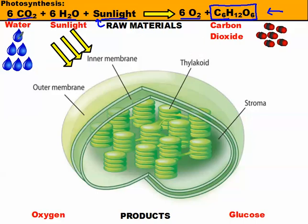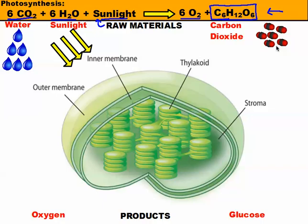In our diagram, the raw materials are at the top. Here we have water — shown as droplets so you can better identify with it. The yellow arrows represent sunlight, and then we have our carbon dioxide. Carbon dioxide has one carbon, represented by the black atom, and two oxygens, represented by the two red atoms. Throughout this lesson, red atoms will be representing oxygen.